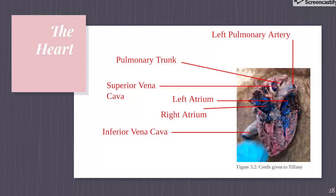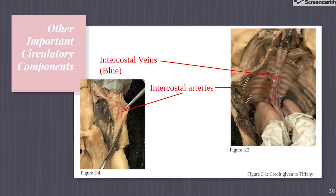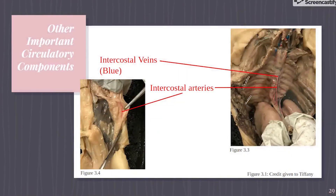The superior vena cava is a major vein that carries blood from the head, neck, upper chest, and arms to the heart. The inferior vena cava is a large vein that carries deoxygenated blood from the lower body to the heart. The circulatory system is also comprised of three different types of blood vessels: arteries, capillaries, and veins. An artery carries blood away from the heart, branching into ever smaller vessels. The smallest arteries, called arterioles, further branch into tiny capillaries where nutrients and wastes are exchanged, then combine to form venules — small blood vessels that carry blood to a vein, which returns blood to the heart.